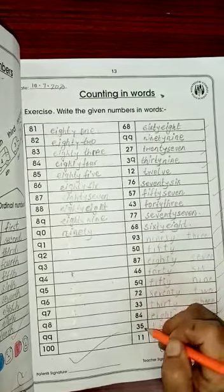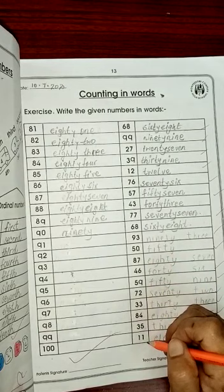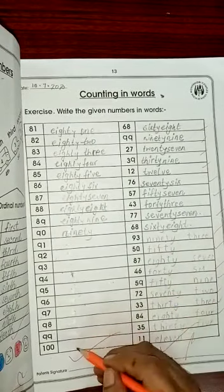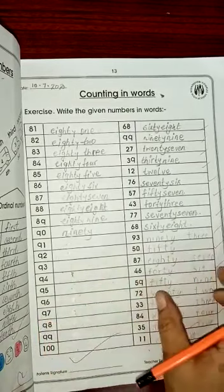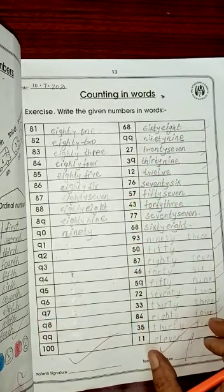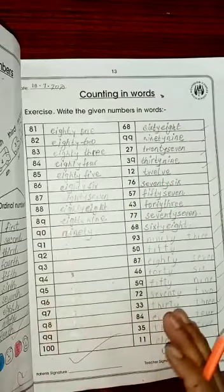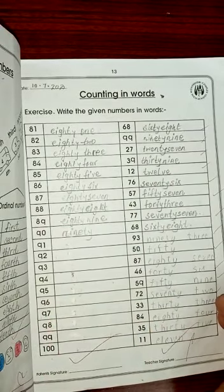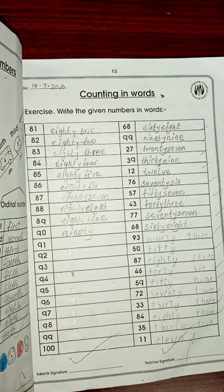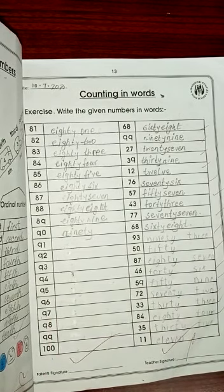84, 35, 11, 11. Yeh sab spelling aap is tarah likhenge. Yahan 100 tak complete karenge is column ko. Phir ye jo different numbers diye gaye hain, inki spelling ko is column ko hum complete karenge. Class, jab aap ye dono kaam complete kar le, ek dafa apne parents ko zaroor check karaiye. Agar kahin spelling mistake ho to wo iski correction kar de.